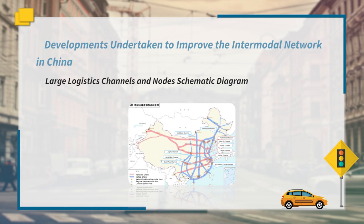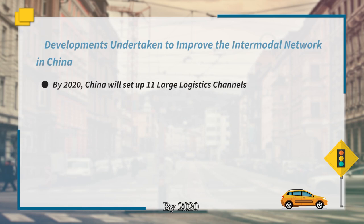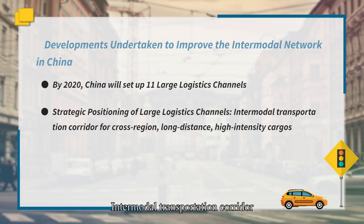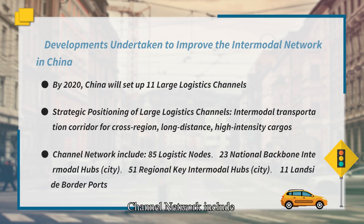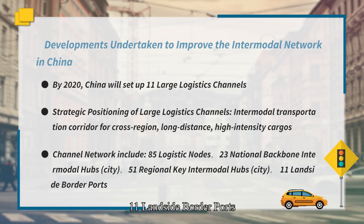The figure shows the Large Logistics Channels and Node Layout, illustrating the development of the intermodal network in China. By 2020, China will set up 11 Large Logistics Channels as intermodal transportation corridors for across-region, long-distance, high-volume cargoes. The channel network includes 85 logistics nodes, 23 national backbone intermodal hubs, 21 regional key intermodal hubs, and 11 landside border ports.